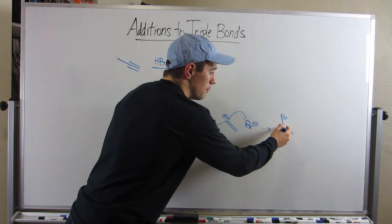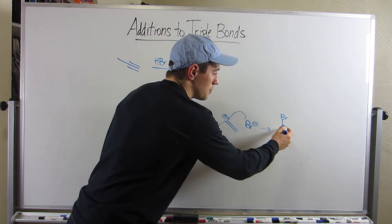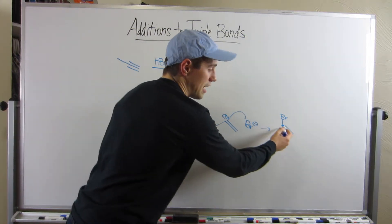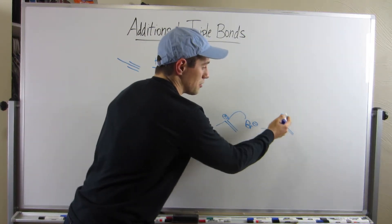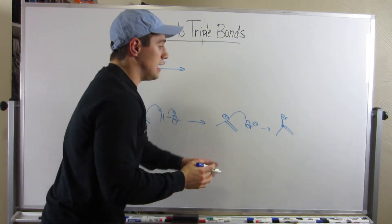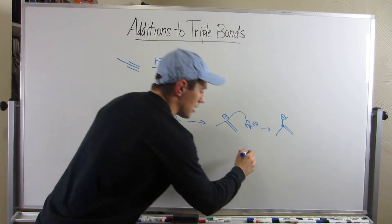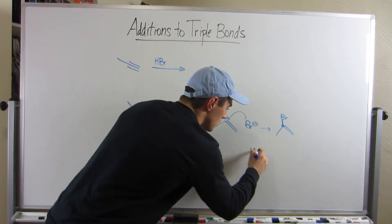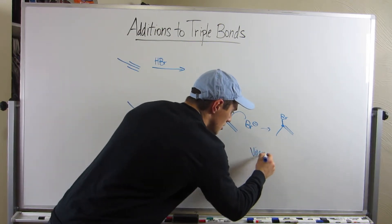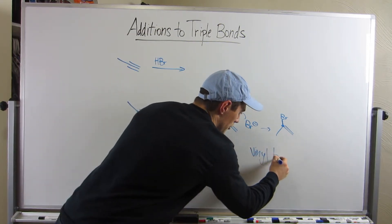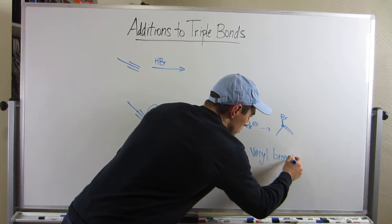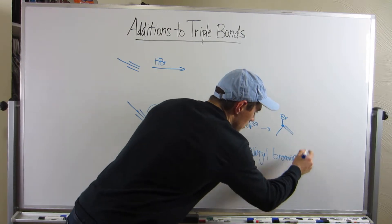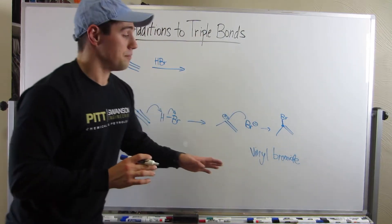Whenever you have something bonded to a carbon that's part of a double bond — an SP2 carbon — and something off of it, it's called a vinyl something. So here we have a vinyl bromide. Not important, just terminology in case you hear it.